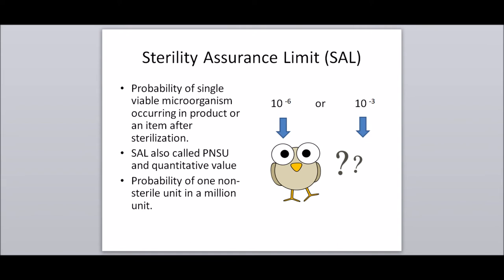Sterility Assurance Level, or SAL: the probability of a single viable organism occurring in a product or an item after sterilization. SAL is also called the probability of a non-sterile unit. The term SAL takes a quantitative value, generally 10 raised to minus 6 or 10 raised to minus 3. A SAL of 10 raised to minus 6 means the probability of one non-sterile unit in one million units.